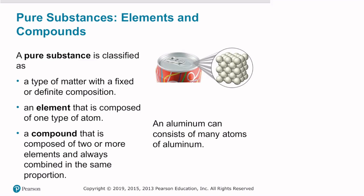An aluminum can, for example, consists of many atoms of aluminum. This is a type of matter that's an element composed of only one type of atom. In further slides, we'll classify different substances according to the type of matter that defines it.